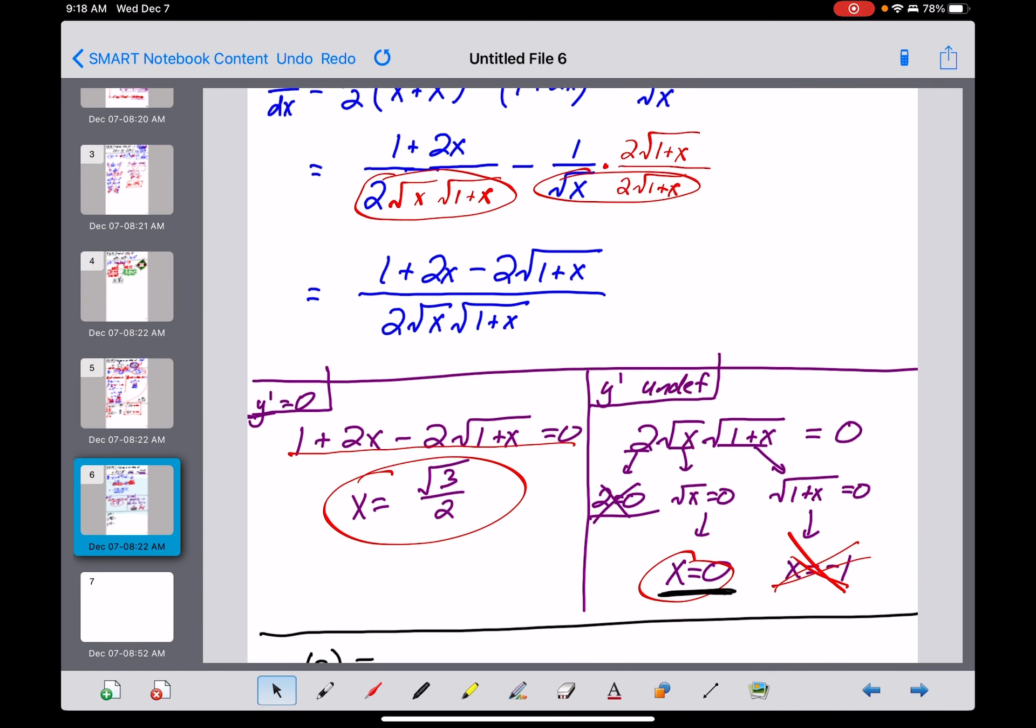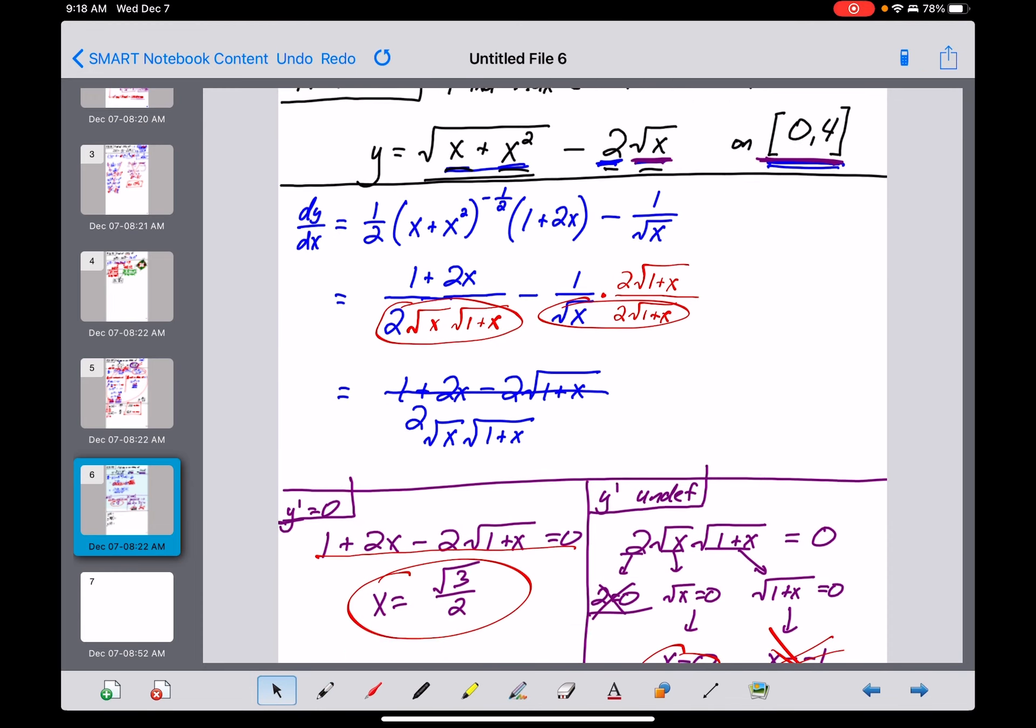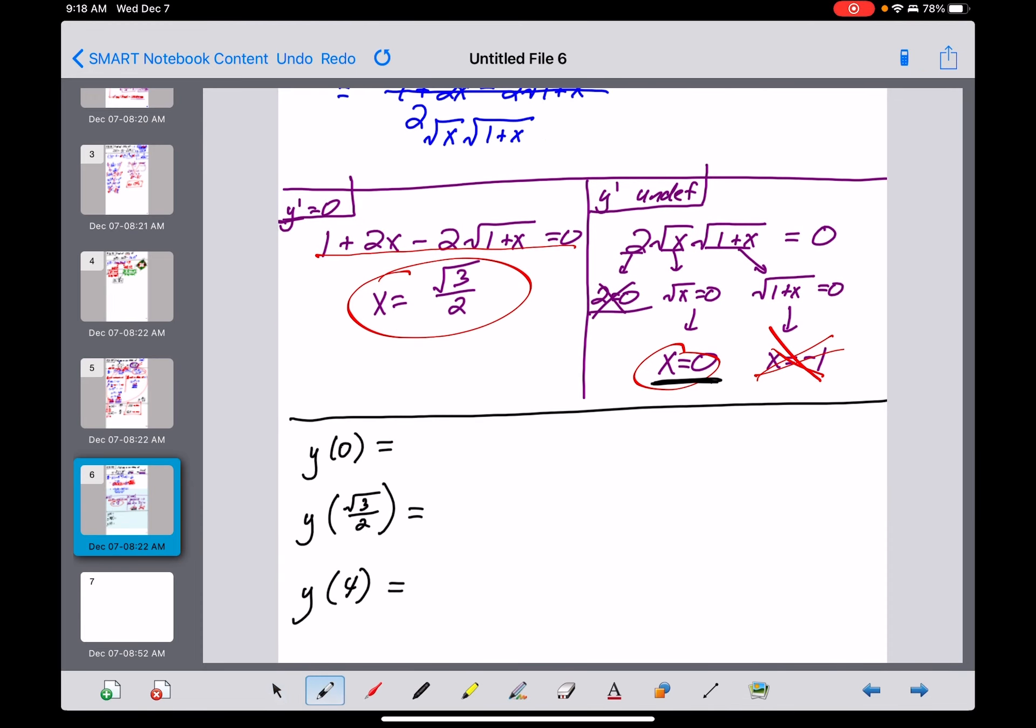So, I've got to come up with y values at all three of those points right there. My question here is, is it worth it to plug those numbers in manually? Well, the 0 isn't that hard, right? That's a 0. That's a 0. Square root of 0 is 0. 2 times 0 is 0. Hey, I got that one. And we end up with y of 0 is equal to 0.